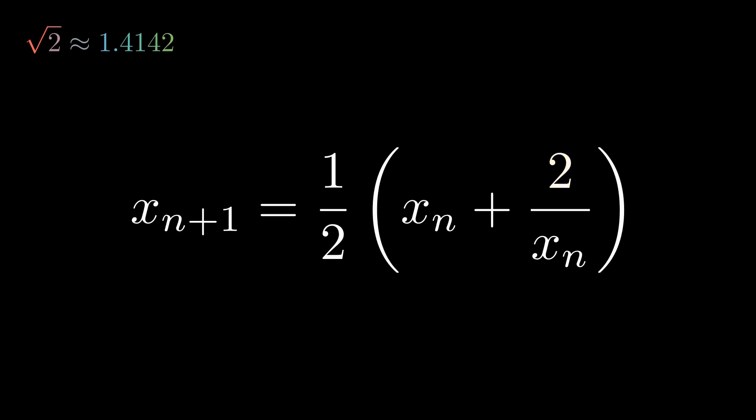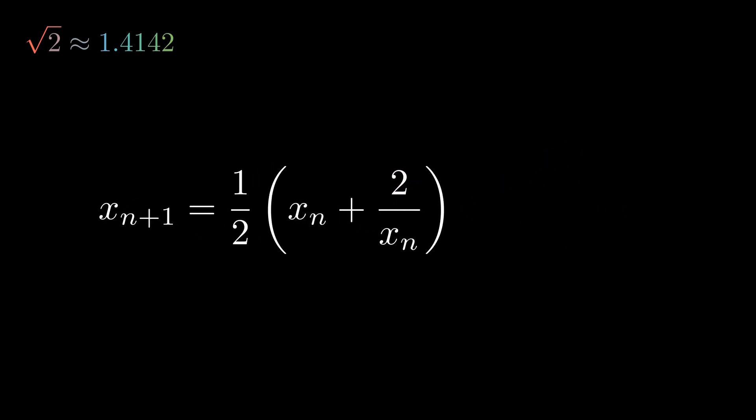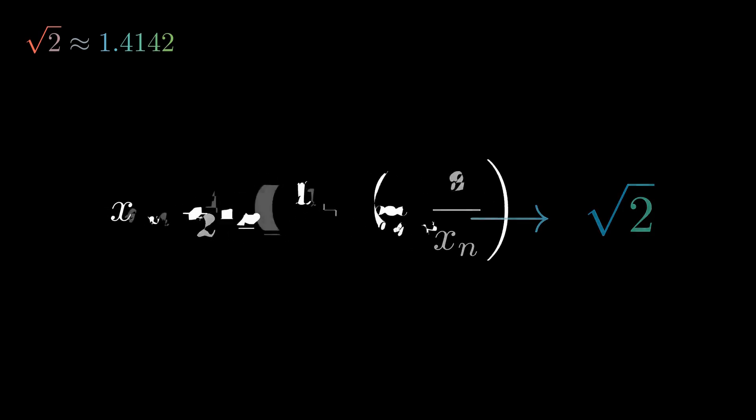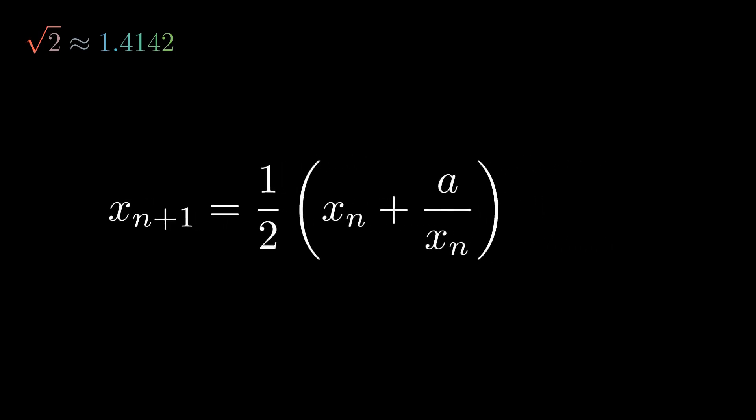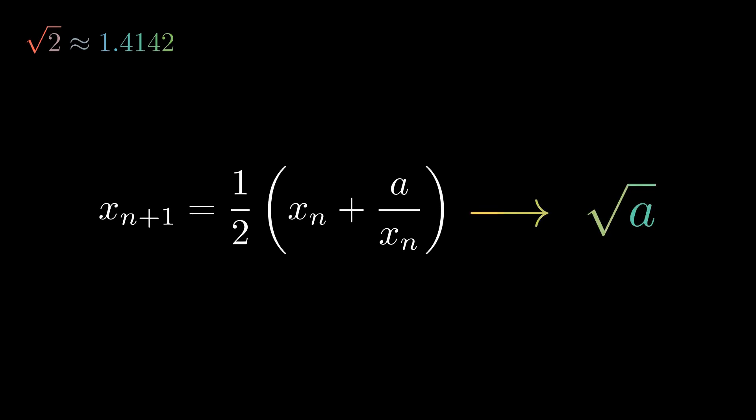Wait a moment. Did you notice the number 2 in the numerator? The sequence converges to the square root of 2 because of it. What if we replace it with any positive number a? Exactly. To approximate the square root of a, just pick any x0 greater than 0 and define.